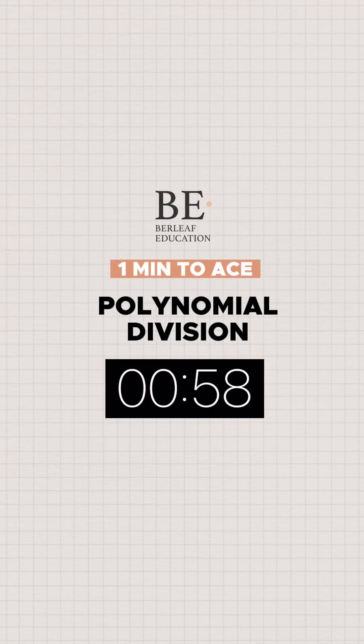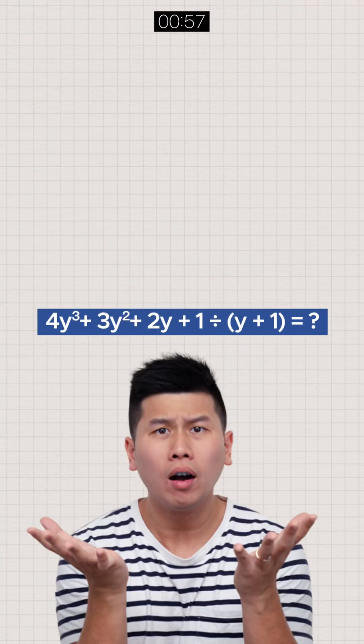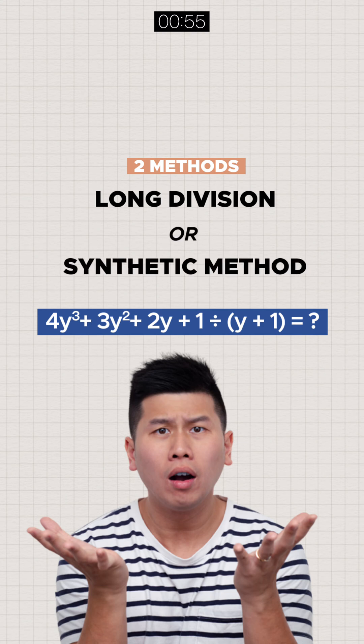Take 1 minute to ace in polynomial division. It can be done either via long division or synthetic method.